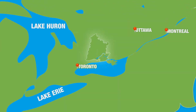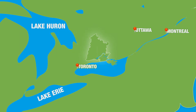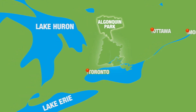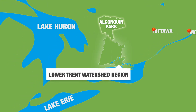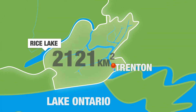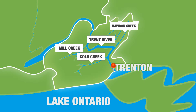The Trent River system drains more than 12,000 square kilometres of central Ontario. The Trent River has its headwaters in Algonquin Park. The Lower Trent Watershed region includes the lower portion of the Trent River watershed downstream of Rice Lake. It covers 2,121 square kilometres, and includes the Trent River and its tributaries like Mill, Broaden, and Cold Creeks.